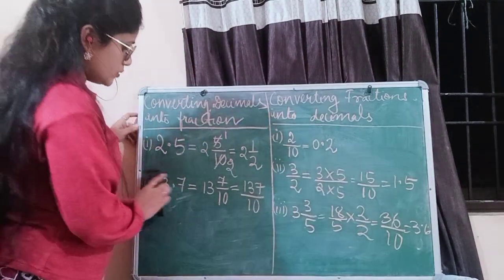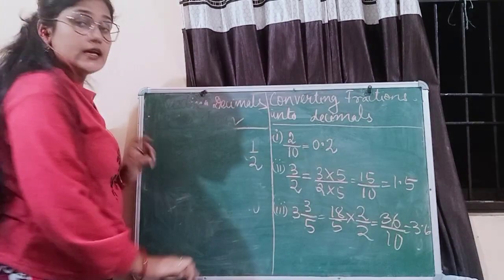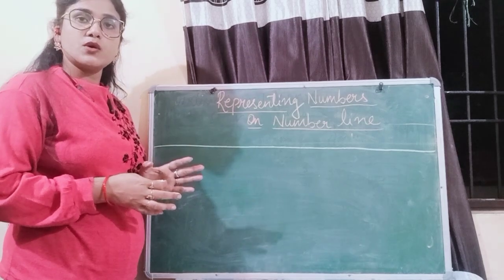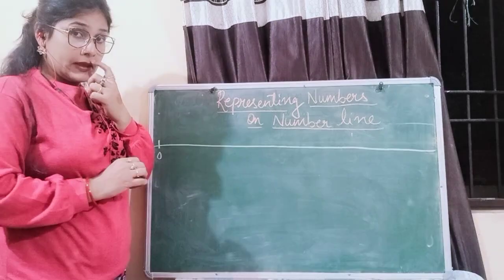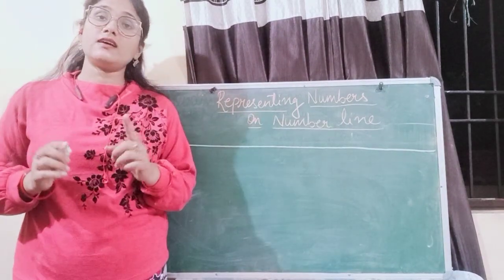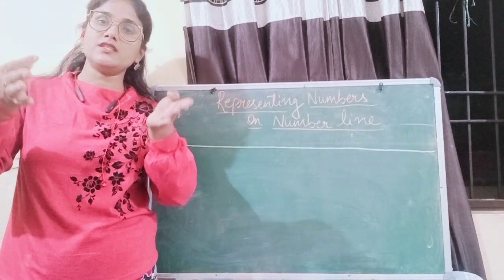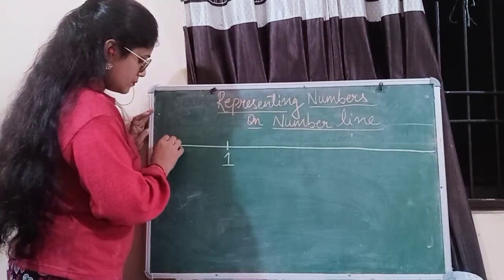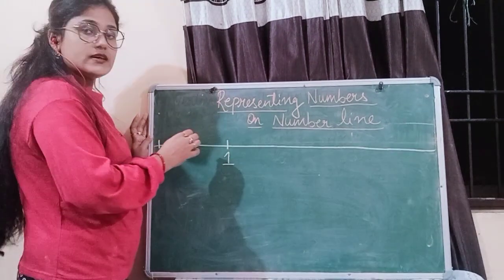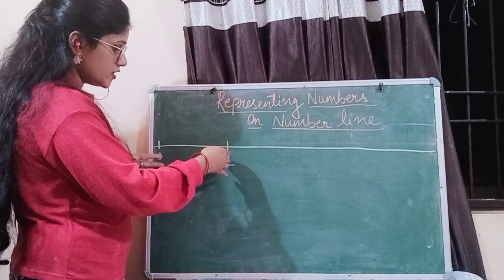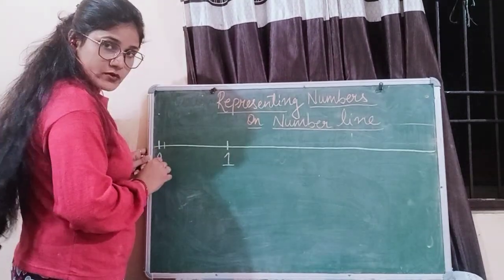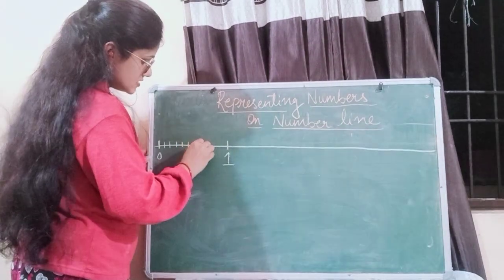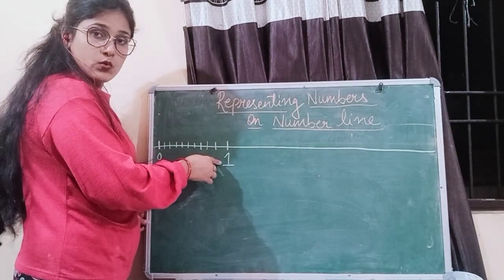Now we will continue with representing decimal numbers on the number line. As you all know, the first number on the number line is 0. As I told you in my first class, a decimal part is a part of a whole. When we divide our whole into different parts, then each part is a decimal part. So if I plot 1 over here, then in between the smaller parts, as you can see the scale, they are the decimal parts which fall between 0 and 1. So this one is 0.1, 0.2, 0.3, 0.4, 0.5, 0.6, 0.7, 0.8, 0.9 and 1.